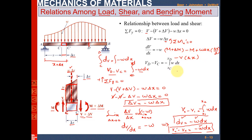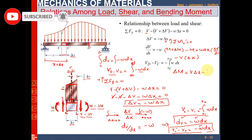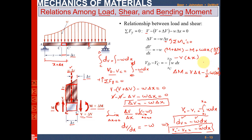Solving this equation gives delta M equal to V·delta x minus one-half times w times delta x squared. Taking the limit on both sides as delta x approaches zero: the limit of delta M equals the limit of V·delta x minus one-half w·delta x squared.